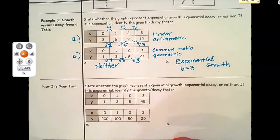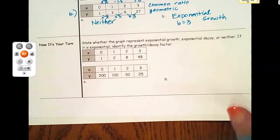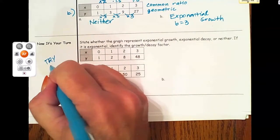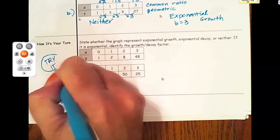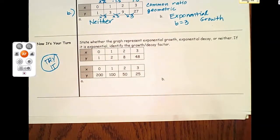Now take a look at the try-it problems. Pause the video and see if you can analyze these two tables and make predictions about whether they're exponential and whether it's growth or decay.